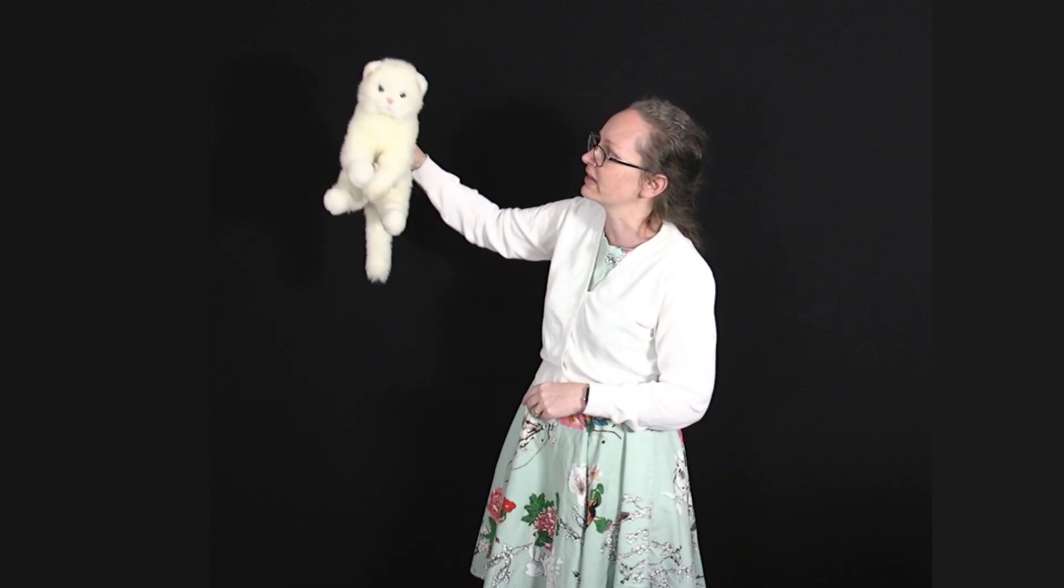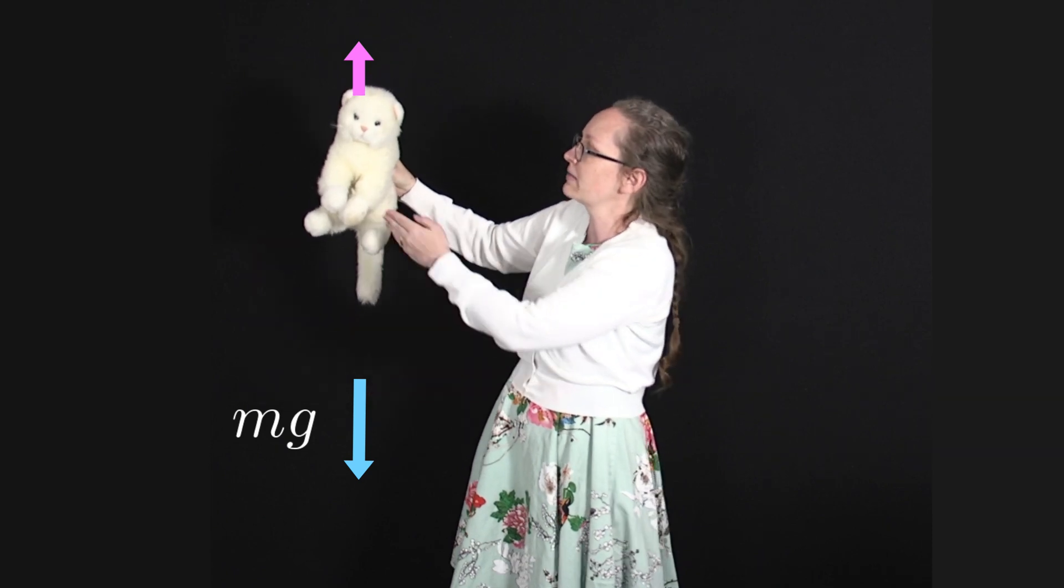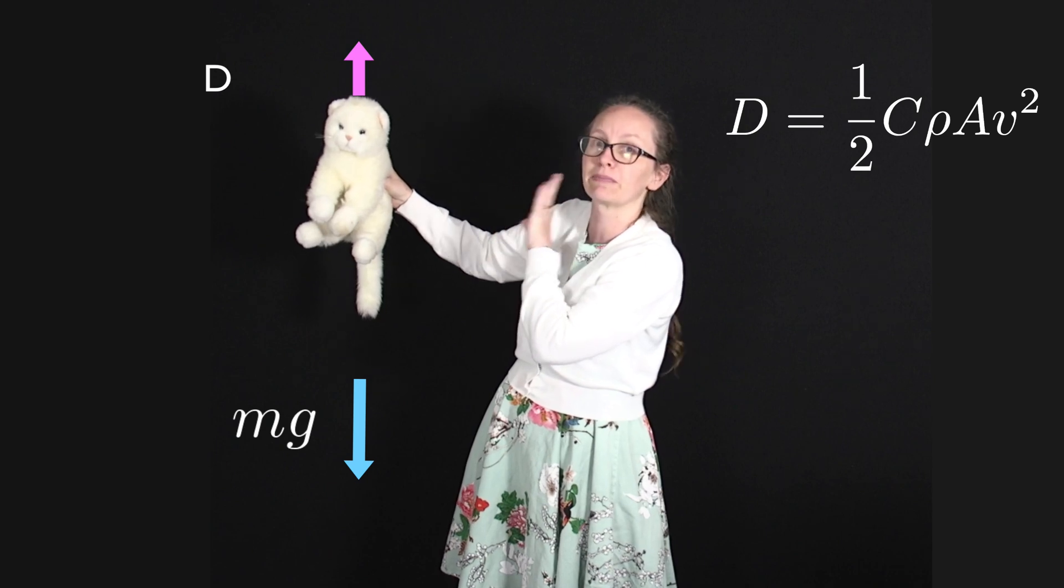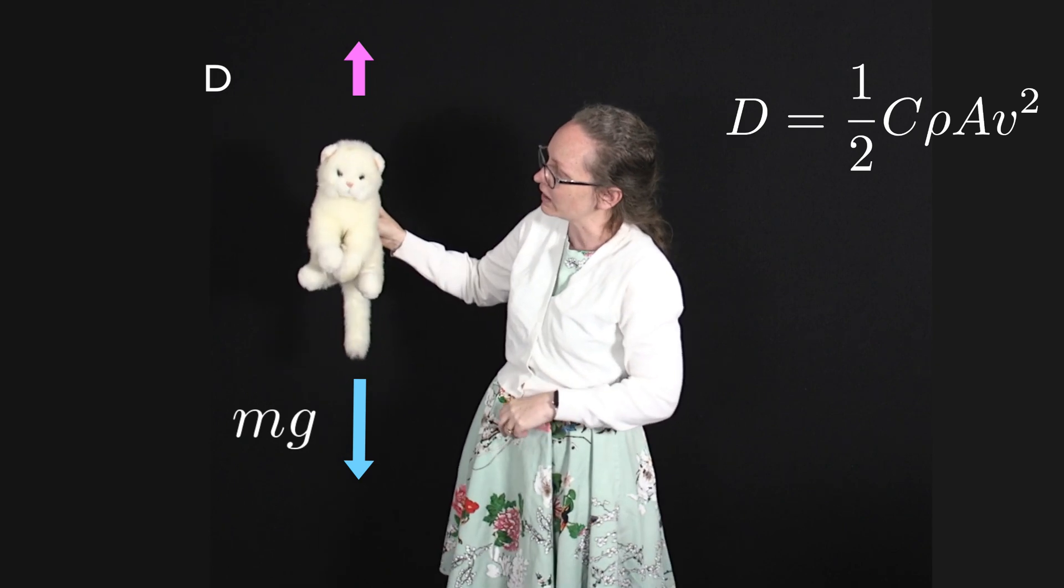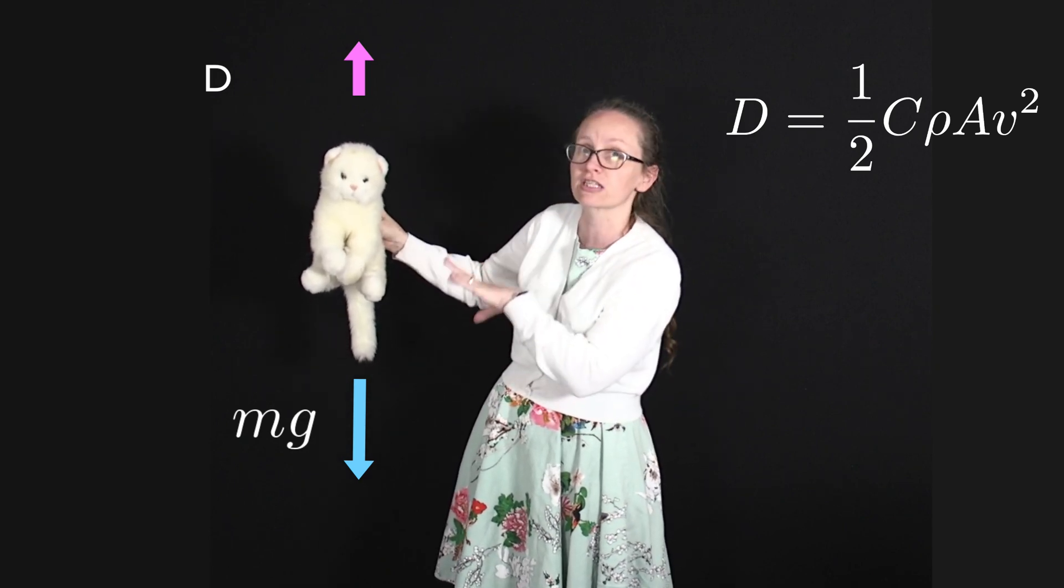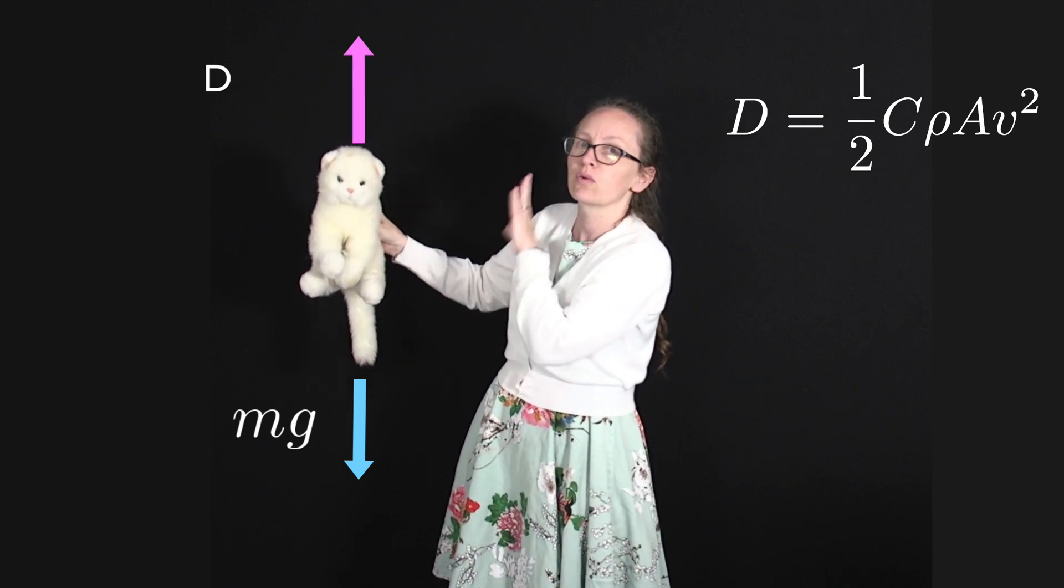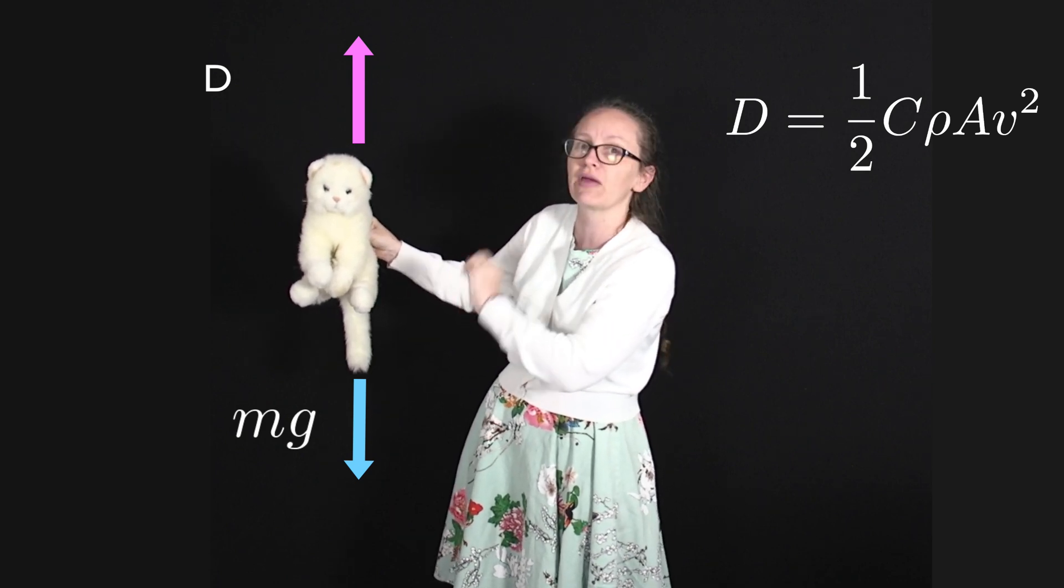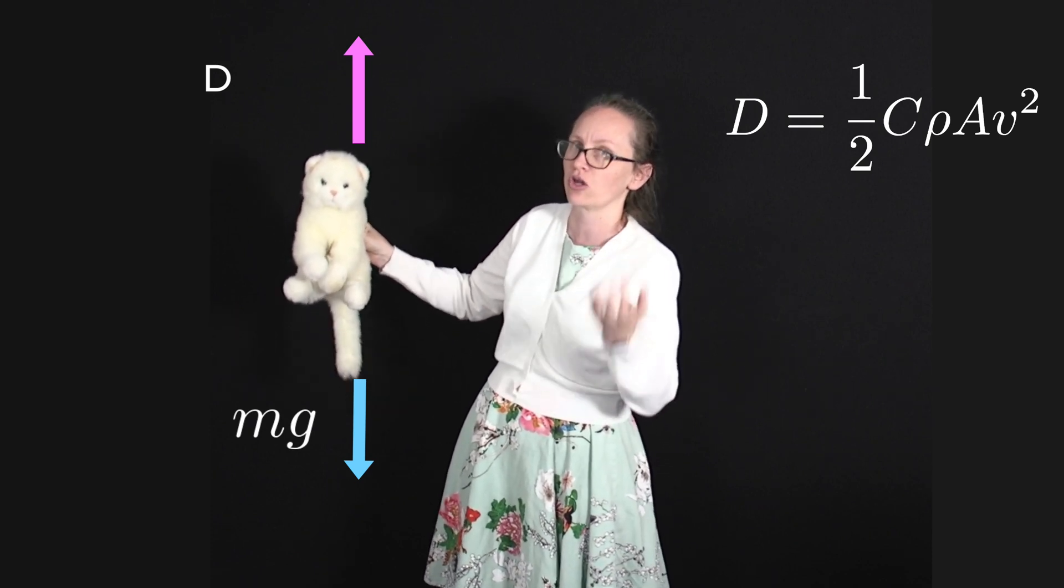So let's consider what's happening. Well, as the cat falls there are two forces which are acting upon it. We've got the weight force which is pulling it down, and then we've got the drag force which is pushing it up. And that drag force, remember, is proportional to the velocity squared. So if a cat falls from really high, at some point it's going to reach a speed where the drag force is equal to the weight force. When these are equal, the net force on the cat is going to be zero. And if the net force is zero, it's no longer accelerating. So this speed is actually known as the terminal speed.